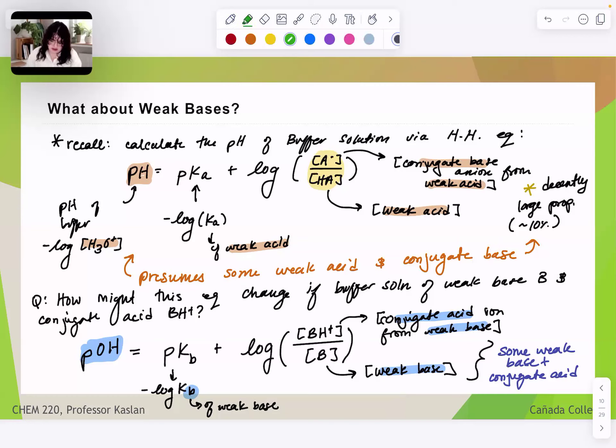And just a reminder about why we care about this, a buffer solution is a solution where we have some weak substance and its conjugate present in non-negligible quantities. So we have ideally equivalents or like 50% of one is the other, right? Something like that. So that's what it means to be a buffer.